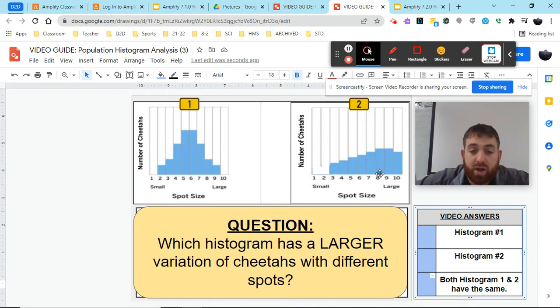So we have two histograms here, number one and number two, with unique variations and distributions for our cheetahs with their spot sizes. The question we're looking to answer is, which histogram has a larger variation of cheetahs with different spots?